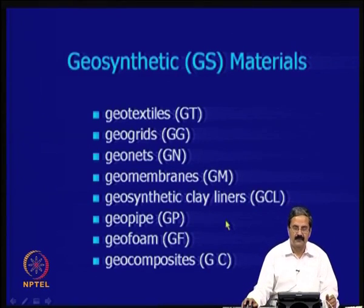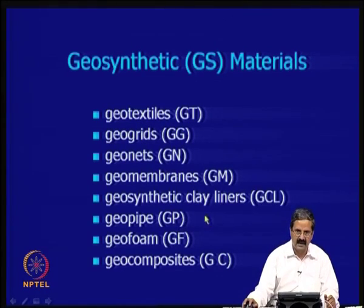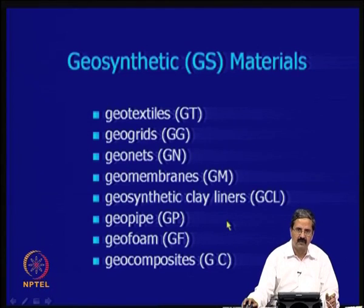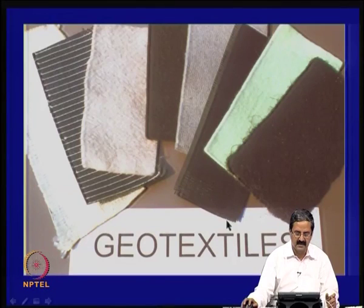The types include geotextiles, geogrids, geonets, geomembranes, geosynthetic clay liners, geopipes, geofoams, and geocomposites — anything that connects to the ground and improves its performance. Essentially, we are looking for ground performance in terms of engineering applications.